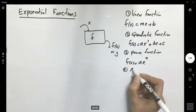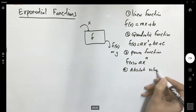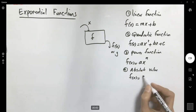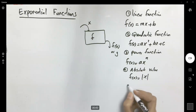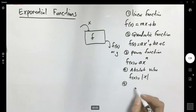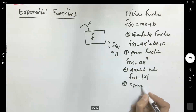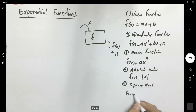We also talked about the absolute value function. The absolute value function is an example of a piecewise defined function, denoted by the absolute value of x. Number five: the square root function, f of x equals the square root of x.